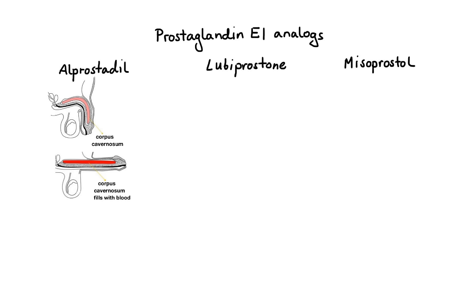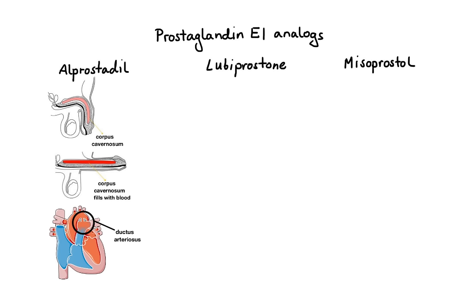Secondly, alprostadil is used in neonates with congenital heart defects to temporarily maintain the patency of the ductus arteriosus. The ductus arteriosus is a blood vessel found in babies before birth that allows blood to bypass the pathway to the lungs. Although this blood vessel typically closes shortly after birth, keeping it open in certain babies with heart defects may improve blood flow and oxygenation. Infusion of alprostadil relaxes the ductus arteriosus and supports its patency until surgery can be performed.